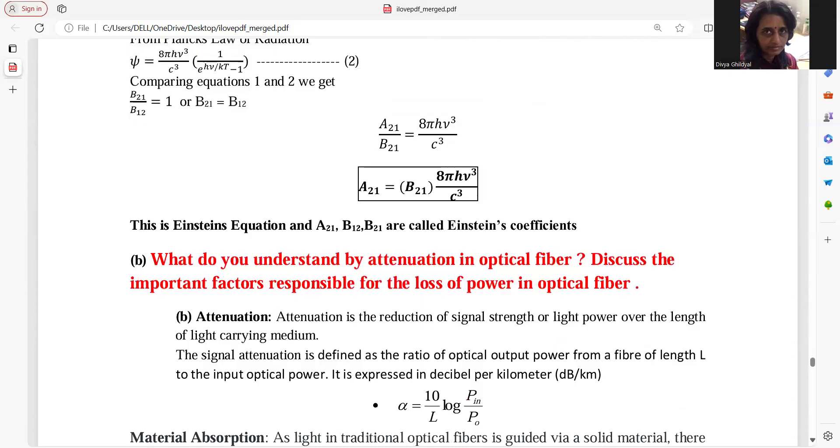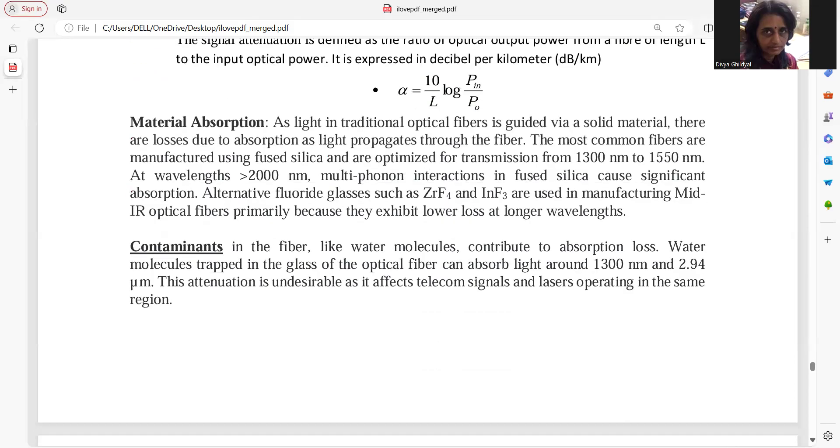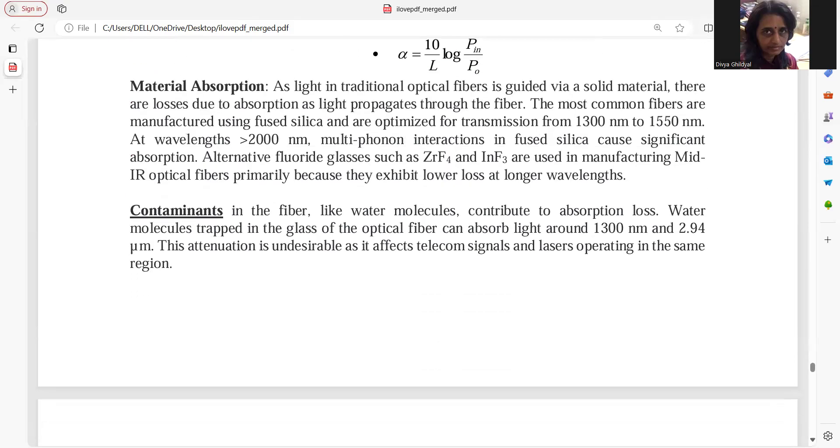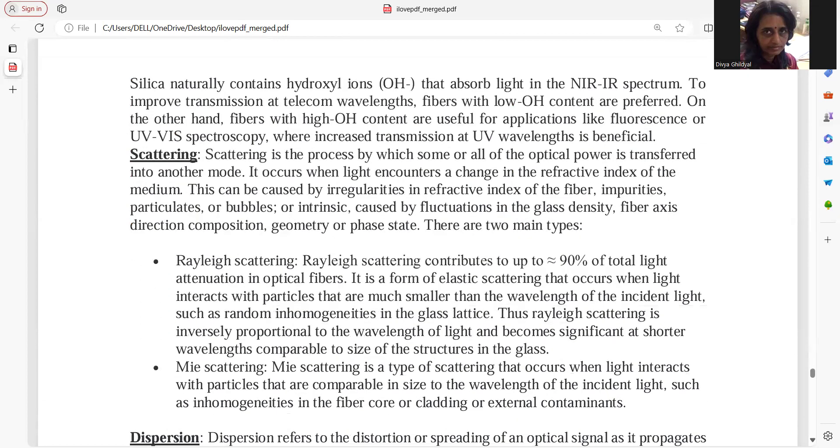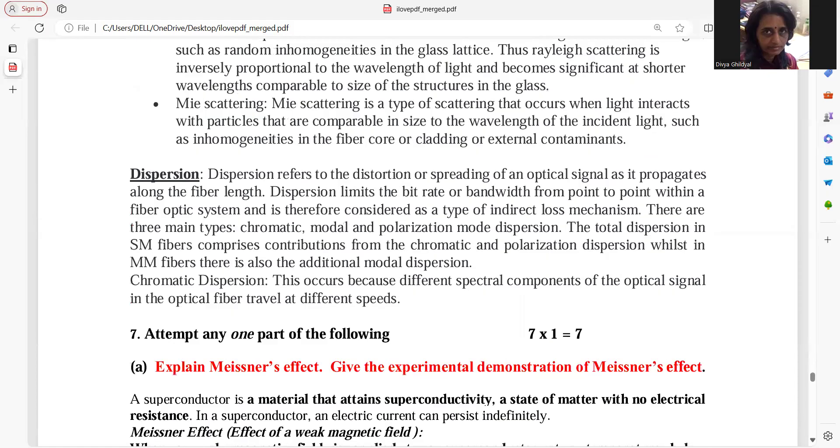Attenuation in optical fiber. They are asking you to discuss the important factors. Attenuation obviously is loss of signal. And what all factors can be there, it is up to you. Whatever you want to write. Absorption, contamination, scattering, etc. They are very common reasons for losses. Dispersion. You can just exaggerate these points per seven mark question.